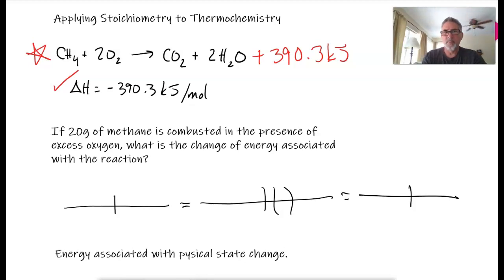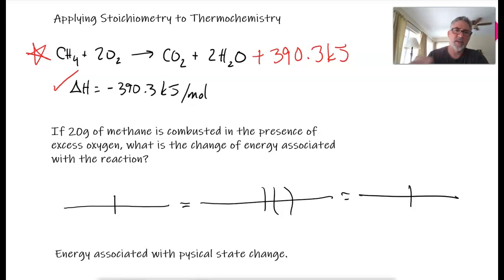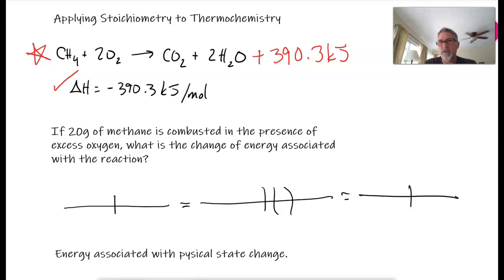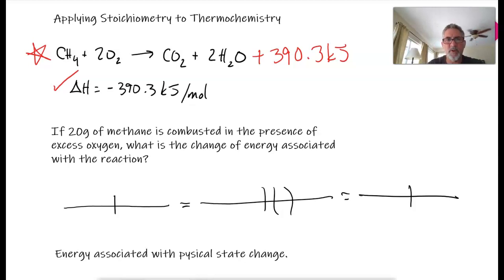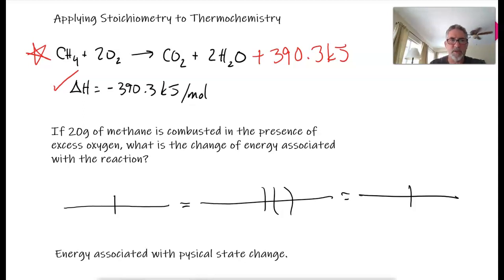Remember that in exothermic reactions, heat is added in the products, and in endothermic it's added in the reactants. So no matter what it is, you know where to put the heat. The problem says if 20 grams of methane is combusted in the presence of excess oxygen, what is the change in energy associated with the reaction?